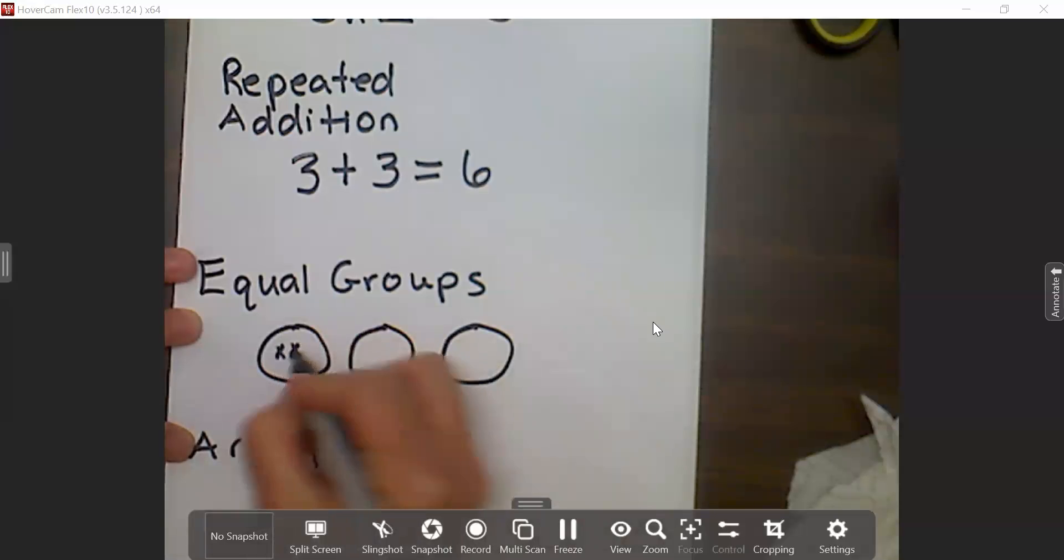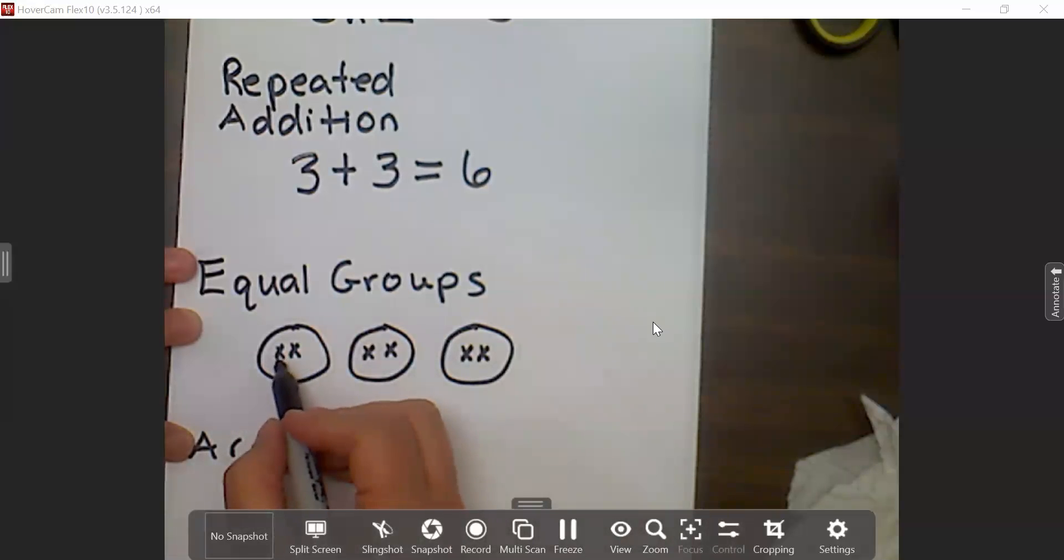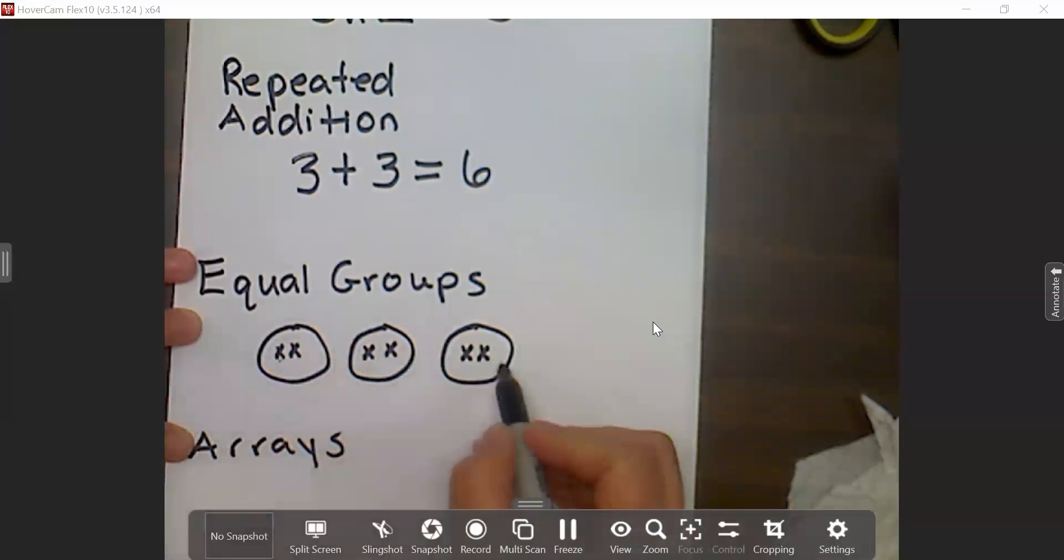And then we put two in each group. Then the students can count how many X's or dots that they've drawn. In this case, they could skip count by twos: two, four, six.